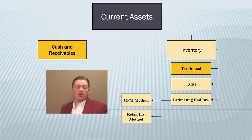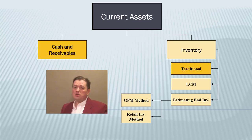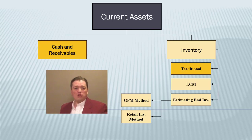Lower of cost or market deals with a more painful topic. Sometimes companies buy inventory and then realize they can't sell it for many reasons. It could be because of damage from a fire or a flood, because new technology has come out and people simply aren't buying those items anymore, or it could be that the market has simply changed and people just don't want it. For all of those different reasons, we have to drop the value of our inventory.